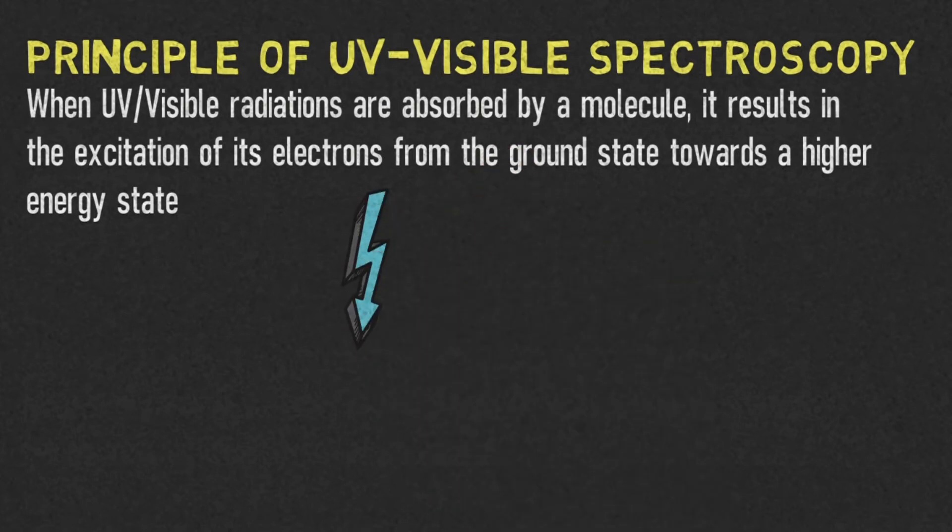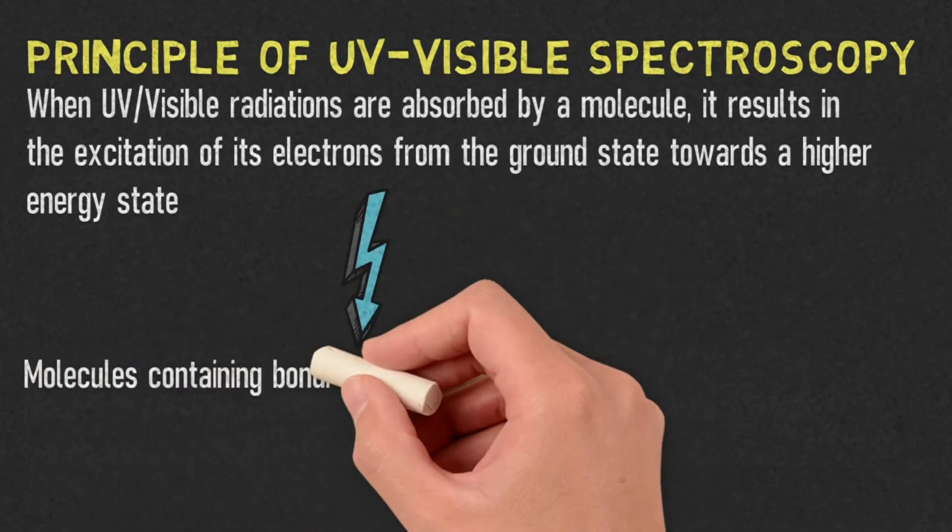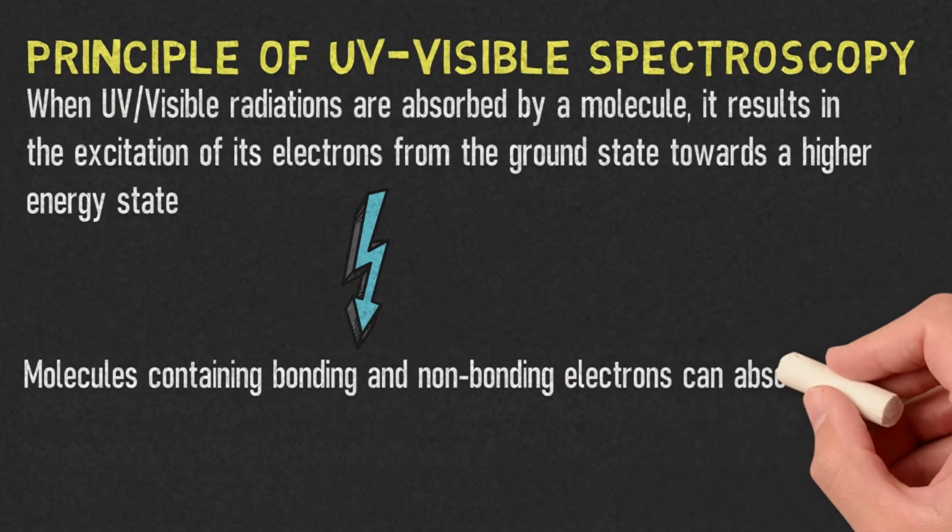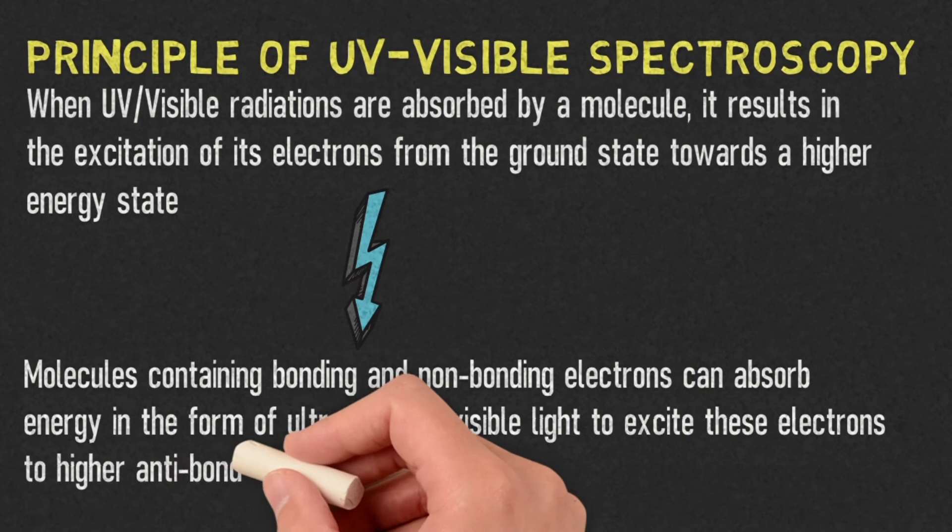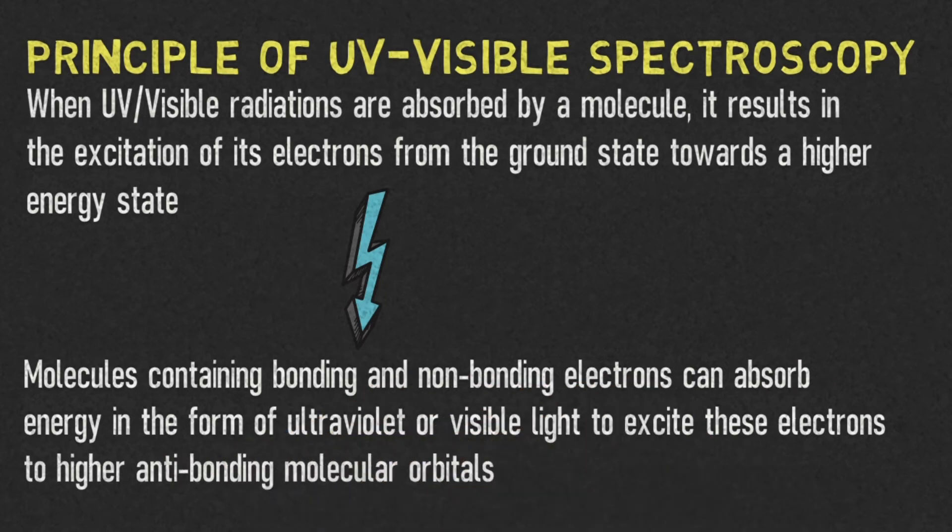In other words, molecules containing bonding and non-bonding electrons can absorb energy in the form of ultraviolet or visible light to excite these electrons to higher antibonding molecular orbitals.